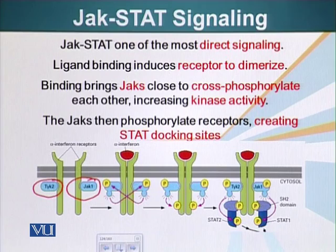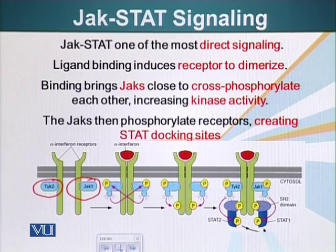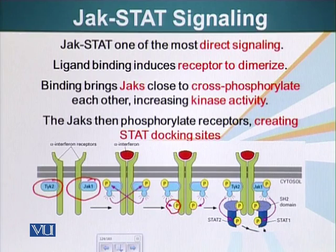Previously we saw that when two receptors came together, they cross-phosphorylated each other and their kinase domains became very active. Here it is the same principle, but the enzymatic activity is present on a different protein. When JAKs are phosphorylated, they phosphorylate specific regions of the receptor, and these phosphorylated amino acids serve as docking sites for another type of protein called STATs.